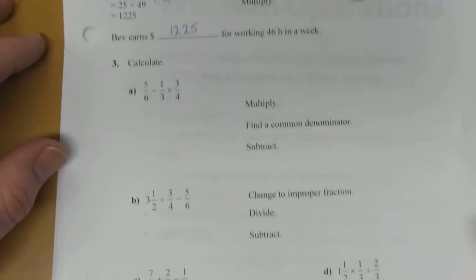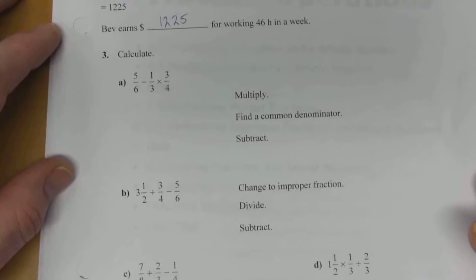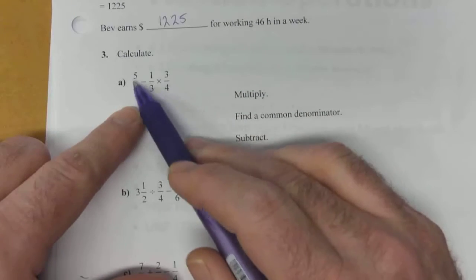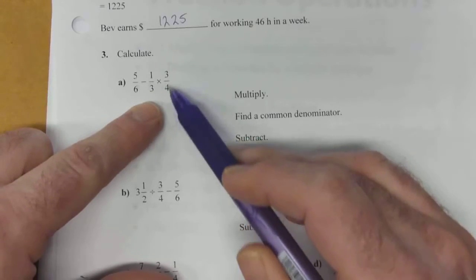All right. Here's some more examples. So we're going to calculate. Here we go. 5/6 minus 1/3 times 3/4.